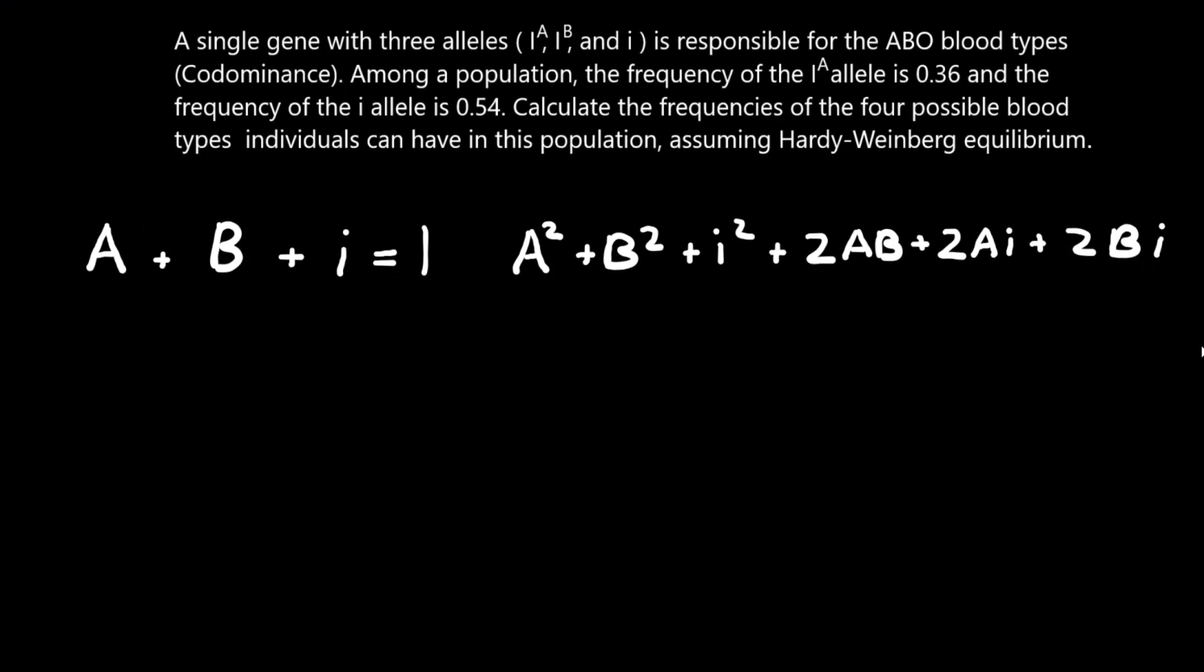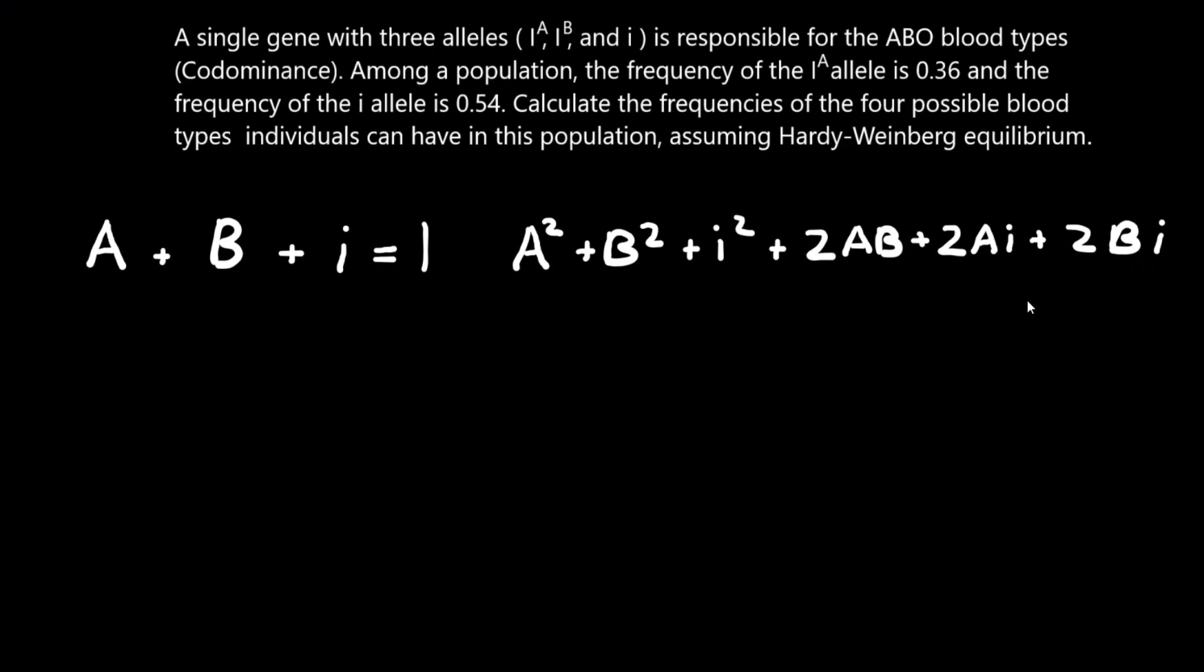Now let's move on to this question where we're talking about blood types. So here I've just simplified the equations so they're easier to read based on the blood types. So this is the A allele, and this is the B allele. These two are codominant, and this is the I allele, which is recessive to the A and B.